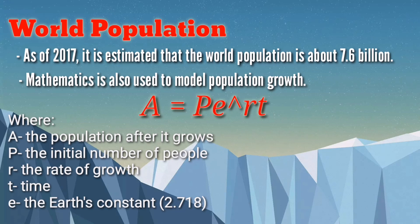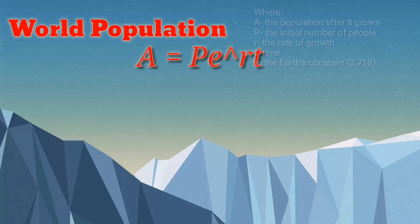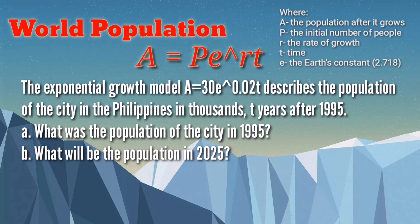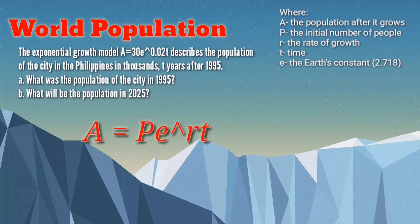Recall further that E is Euler's constant with an approximate value of 2.718. Plugging in values to this formula would result in the population size after time T with a given growth rate. For example, the exponential growth model A equals 30 times E raised to 0.02T describes the population of a city in the Philippines in thousands, T years after 1995. Question: What was the population of the city in 1995? What will be the population in 2025?